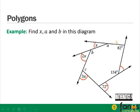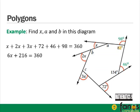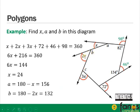Taking all the exterior angles of the polygon: the angle supplementary to 134° is 46°, and the angle supplementary to 82° is 98°. Adding all exterior angles: x + 2x + 3x + 72 + 46 + 98 = 360, so 6x + 216 = 360, giving 6x = 144 and x = 24. Angle A is supplementary to x, so it's 180 − 24 = 132 degrees.